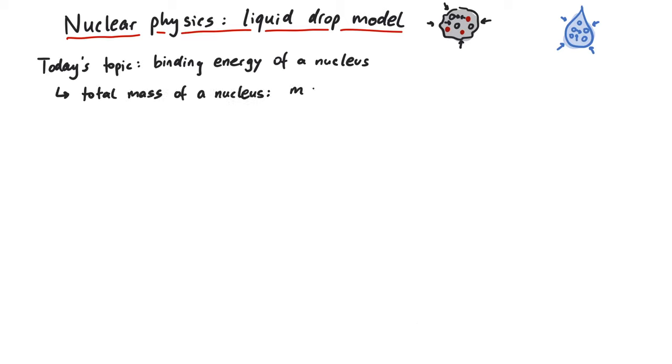The total mass is given by the sum of all proton masses plus all neutron masses, and then minus the binding energy. Here we can see that the nucleus is usually lighter than the sum of its constituents.